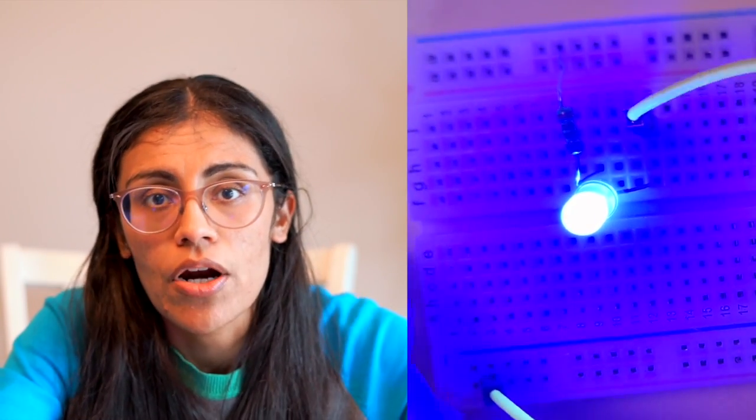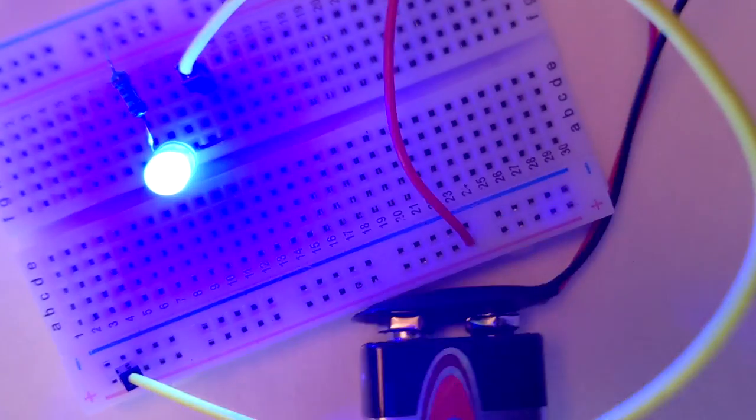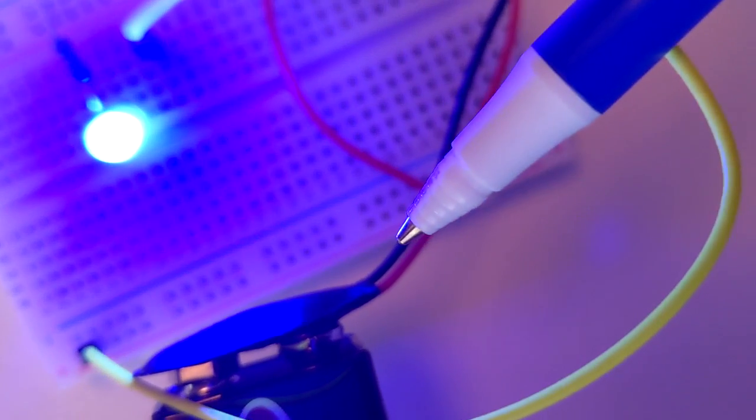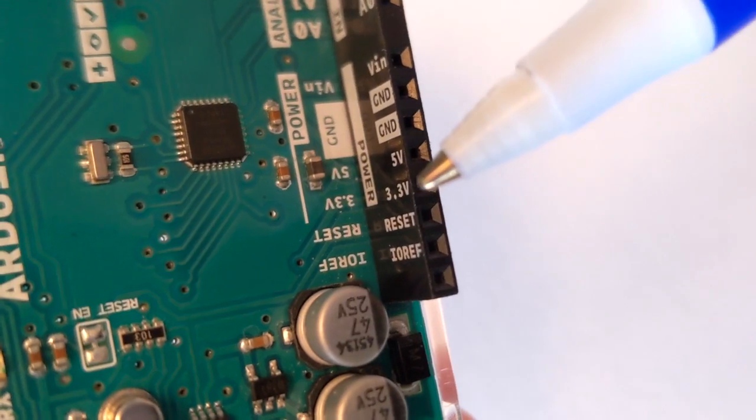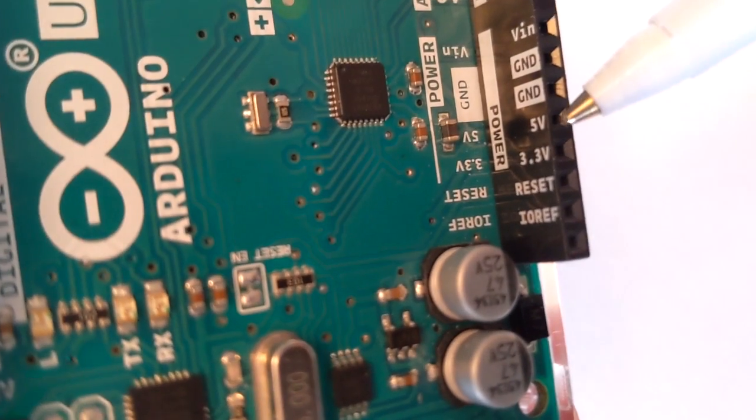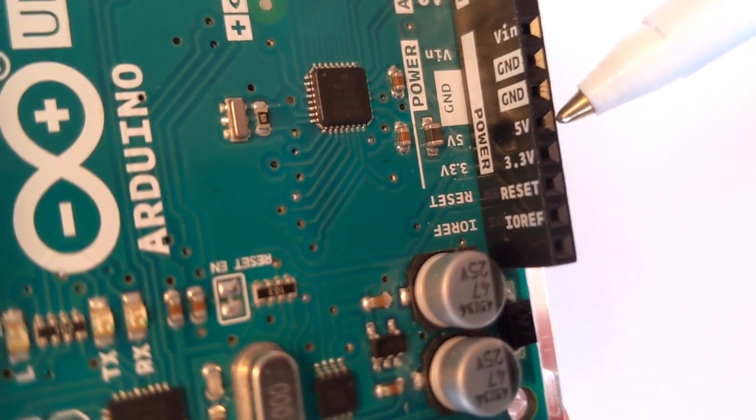We're going to eventually take away that battery so that we can get the power from our board. So there are two pins that are very important and they act like the positive and negative terminals of our battery. So we'll start with the five volt pin. There's also a 3.3 volt pin.